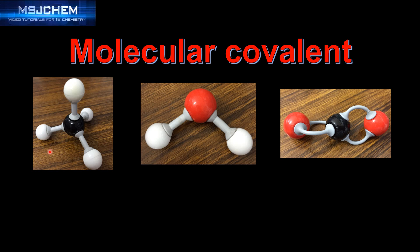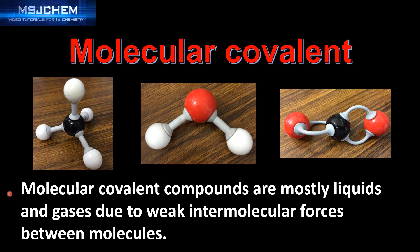Let's start by looking at molecular covalent structures. Here are some examples of molecules that have molecular covalent structures. They form discrete molecules such as CH4 (methane), H2O (water), and CO2 (carbon dioxide). Molecular covalent compounds are mostly liquids and gases due to the weak intermolecular forces between the molecules.